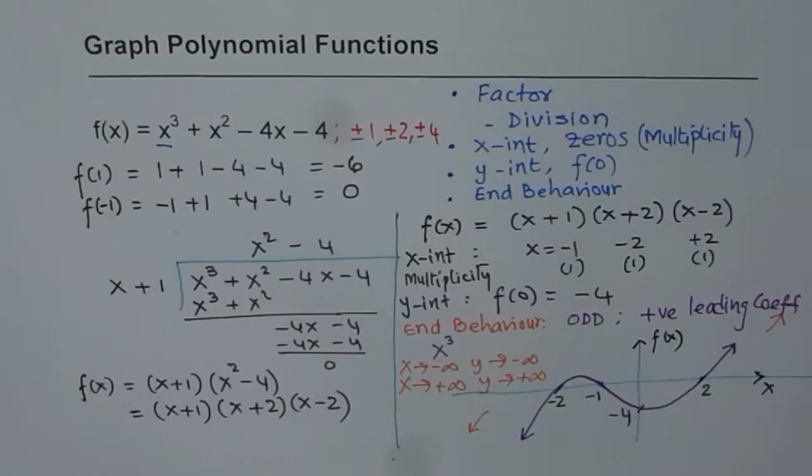That is so simple. Always ensure that the graph is a smooth curve. Label critical points which you have already found. And that is how it should be. Go through this video, understand all the steps, and then move on and draw as many polynomials as you can. Thank you and all the best.